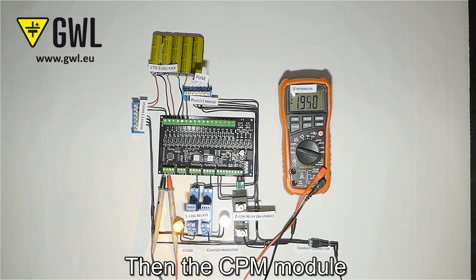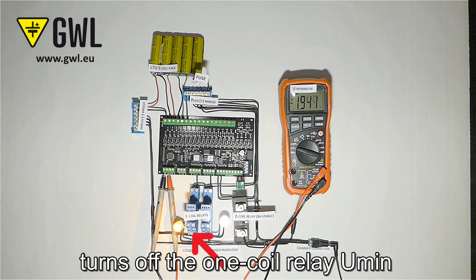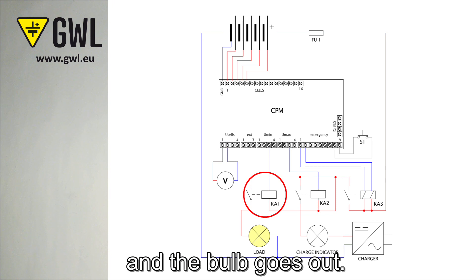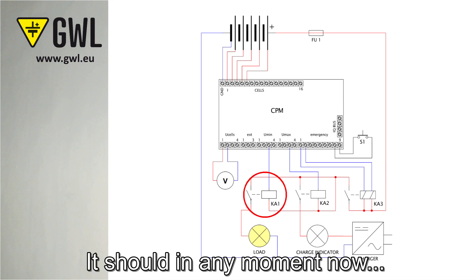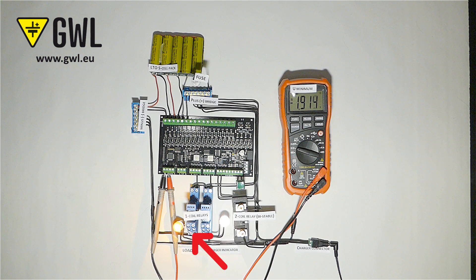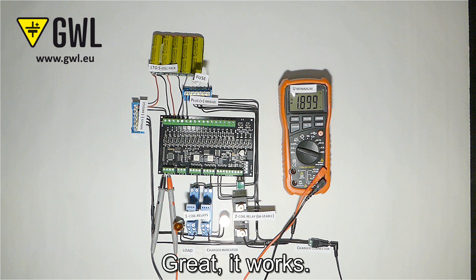Then the CPM module turns off the one coil relay U-min and the bulb goes out. Should be any moment now. Yeah great, it works.